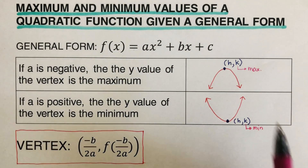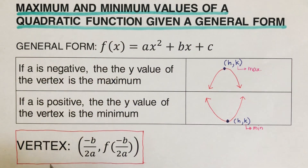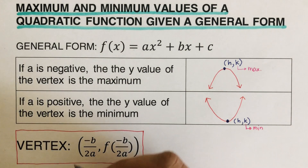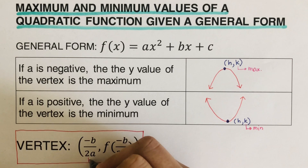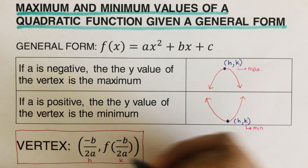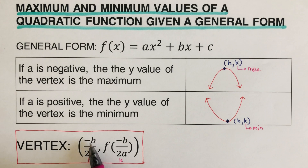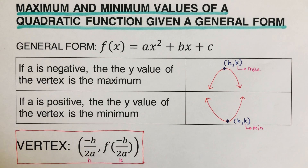So how do we find the vertex of a general form? We have a formula: the vertex is (h, k). The h is negative b over 2a. The k is actually the function of h — whatever the value of h, you plug it into x of the original equation to find k. Let's have an example to see the process.